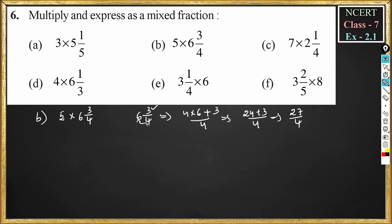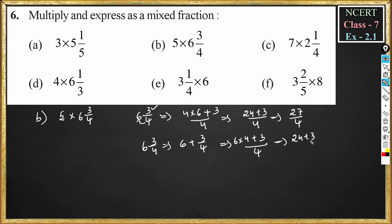If you get confused, you can also write 6³/₄ as 6 + 3/4. The LCM is 4, so this becomes (6 × 4 + 3) / 4, which equals 24 + 3 by 4, equal to 27/4. This is another way to convert a mixed fraction into an improper fraction. Now 5 into 6³/₄ becomes 5 into 27/4.